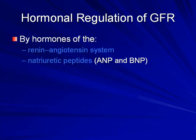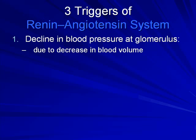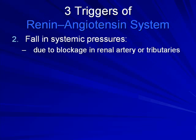Hormonal regulation is based on the enzymes renin — the renin-angiotensin system — and natriuretic peptides (ANP and BNP). The renin-angiotensin system causes the juxtaglomerular apparatus, at the interface between the proximal convoluted tubules and the capsule, to trigger release of renin. When triggered, we see a decline in blood pressure to the glomerulus due to decreased blood volume, or a fall in systemic pressure due to blockage of the renal arteries.